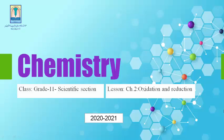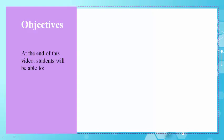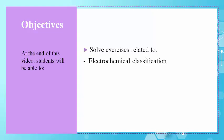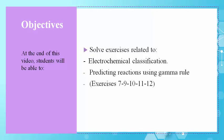As-salamu alaykum wa rahmatullah. We are going to continue our lesson which talks about oxidation and reduction. At the end of this video, you will be able to solve exercises related to electrochemical classification and predicting reactions using the gamma rule by solving exercises 7, 9, 10, 11, and 12.